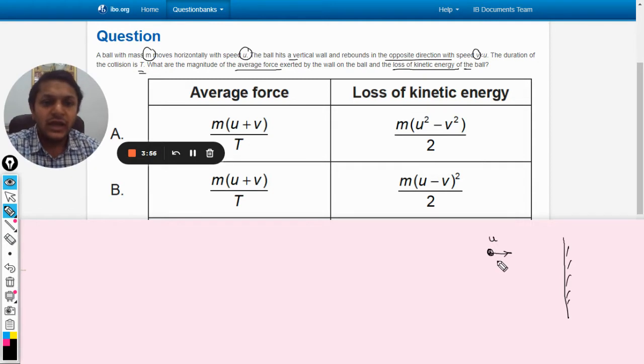So let us say that this direction is taken as positive and this is taken as negative. You can choose any positive or any negative, we will see later.